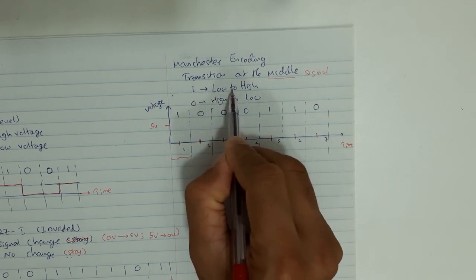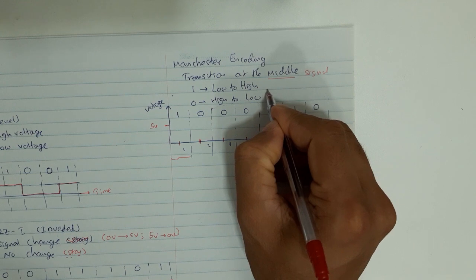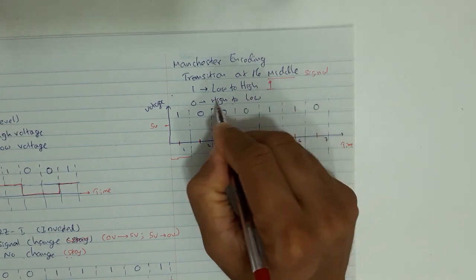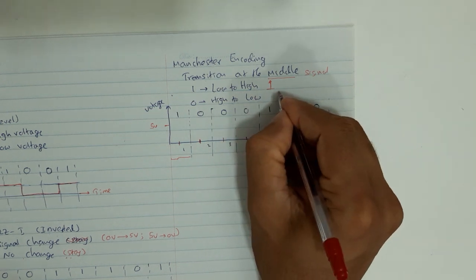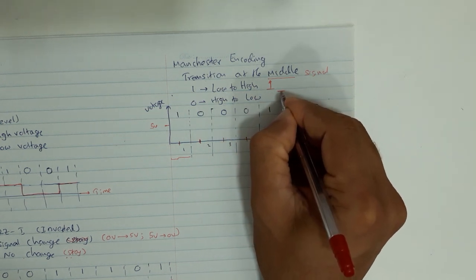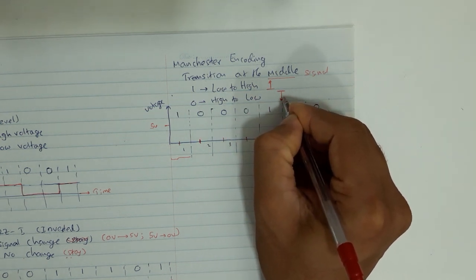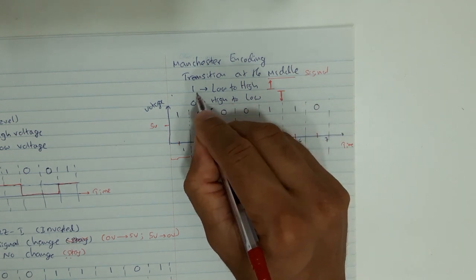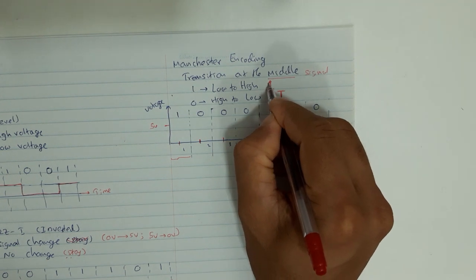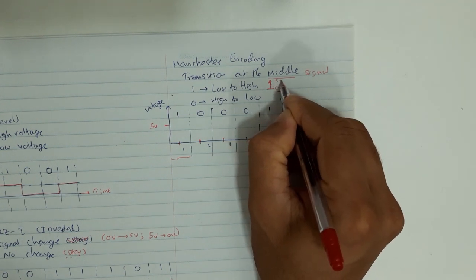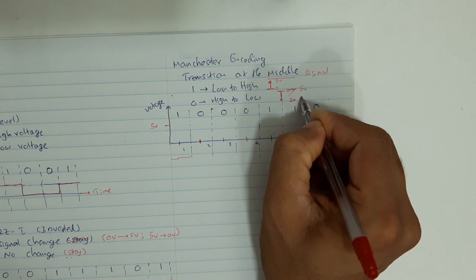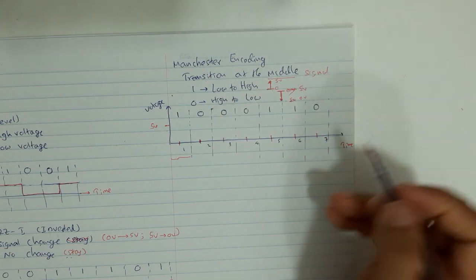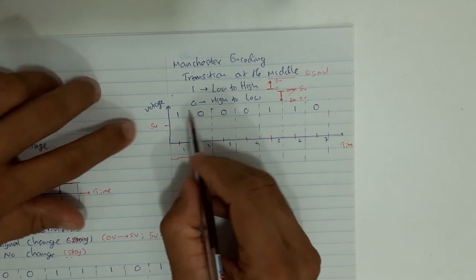In Manchester encoding: to represent 1, the signal must go from low to high at the middle — we are at the low level and change to high. To represent 0, it must go high to low — whatever the situation, it must be high-to-low to represent 0 and low-to-high to represent 1. So 0 volts is low, 5 volts is high.